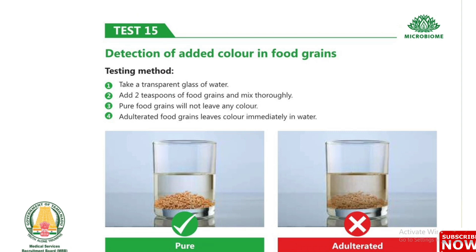Test 15: Detection of added color in food grains. Take a transparent glass of water, add 2 teaspoons of food grains and mix thoroughly. Pure food grains will not leave any color in the water. Adulterated food grains leave immediate color in the water.